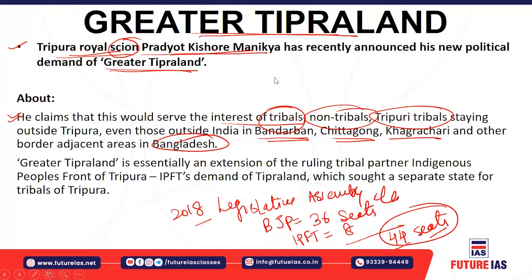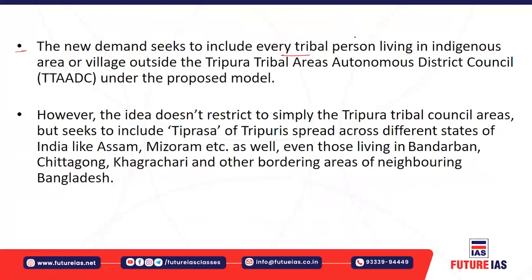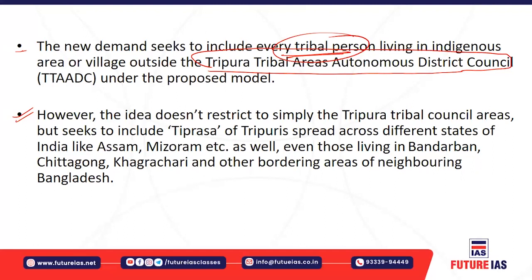Within India's constitution, if autonomy can be granted, the Government of India should grant it because the constitution recognizes the unique demands from different sections of society. However, it cannot be fulfilled if there is a demand for an independent state. The new demand seeks to include tribal persons living in tribal areas, indigenous areas, and villages outside the Tripura Tribal Areas Autonomous District Council.